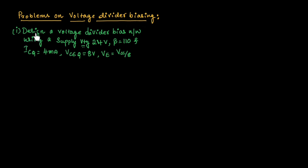Let us consider a first problem where we need to design a voltage divider bias network using a supply voltage of 24V. Beta is given as 110 and ICQ value is 4 mA. VCE at Q point is 8 volts and VE is equal to VCC divided by 8. In this problem, they have asked us to design a voltage divider bias network, which means once you solve the problem, you need to draw the circuit and then substitute all the values which you have calculated.